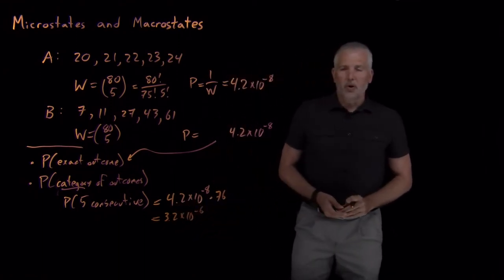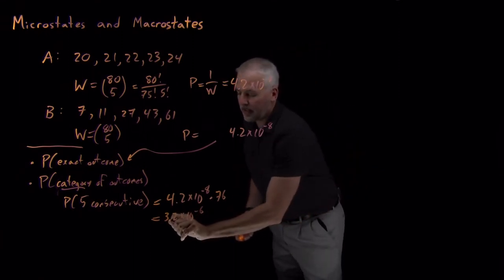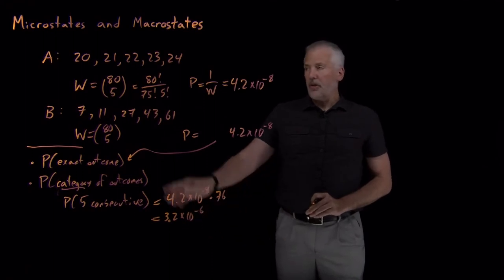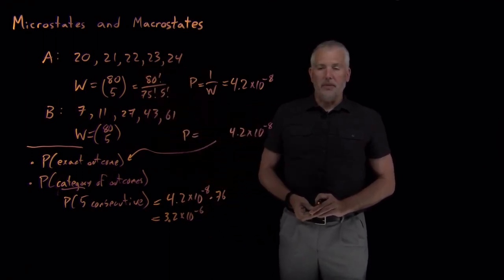And what do we get out when we do that? So that's somewhat more likely, still pretty rare, 3.2 times 10 to the minus 6. About one time in 300,000, the lottery numbers will come out as five consecutive numbers.